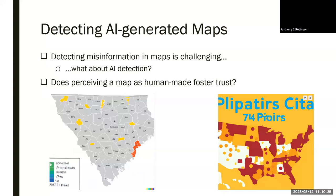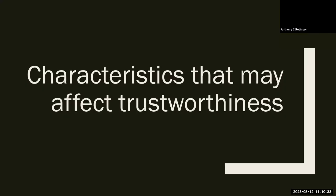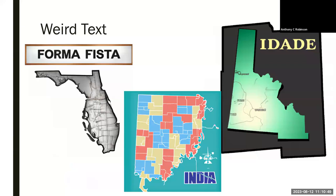A follow-up question is: does a human-made map seem more trustworthy than an AI-generated map? I looked at a sample of maps that Yuhao Kang generated and tried to find characteristics that might affect people's perceptions of trustworthiness. It's pretty obvious that a lot of the DALL-E maps have really strange text. For example, this is the state of Indiana in the United States, and it's actually labeled as 'India,' which is definitely not India.